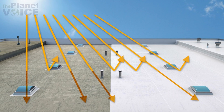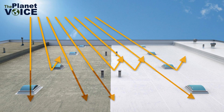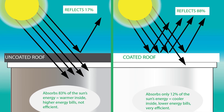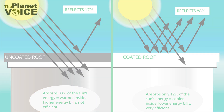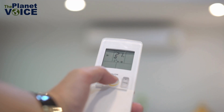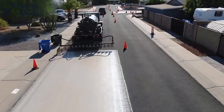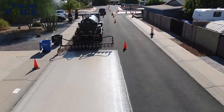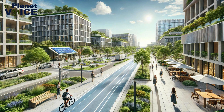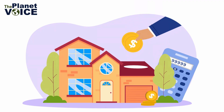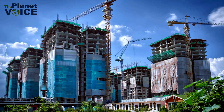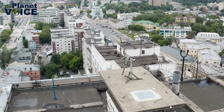Another effective solution is the use of cool roofs and pavements. These materials reflect more sunlight and absorb less heat than traditional materials. Cool roofs can reduce indoor temperatures and lower the need for air conditioning. Cool pavements can reduce surface temperatures, making urban areas more comfortable for pedestrians and cyclists. These technologies are cost-effective and can be implemented in both new constructions and existing buildings.